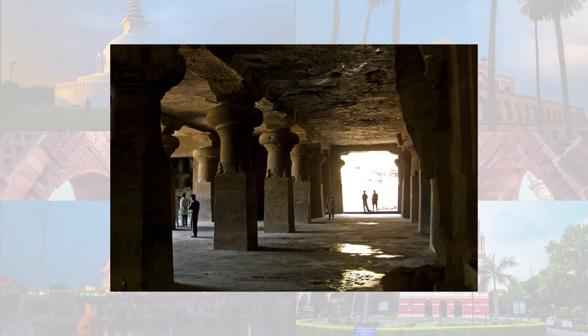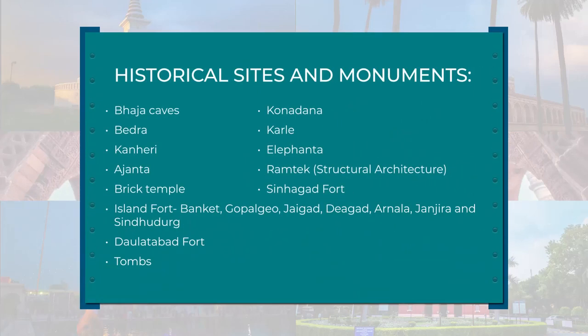The Elephanta Caves are a network of sculpted caves located on Elephanta Island, or Gharapuri, in Mumbai Harbour, 10 km to the east of Mumbai, and are a tribute to the legend of Lord Shiva. There are many historical sites and monuments in Maharashtra, including Bhaja Caves, Konadana, Vedra, Karle, Kanheri, Elephanta, Ajanta, Sinhagad Fort, Island Forts like Baneket, Jaigarh, Diegad, Arnala, Janjeera, Sindhudurg, Daulatabad Fort, and a number of tombs.